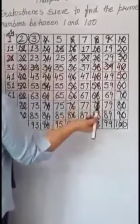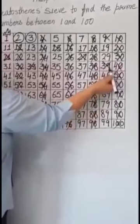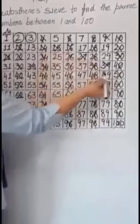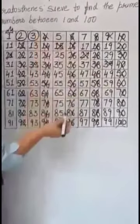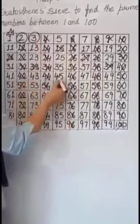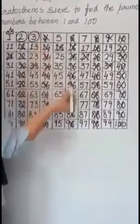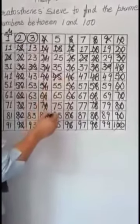We can use divisibility rules also. For 39, 3 plus 9 equals 12, which is in the 3's table, so 39 is divisible by 3. For 45, 4 plus 5 equals 9, and 9 is in the 3's table, so 45 is divisible by 3. We have cut all the multiples of 3.